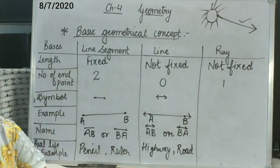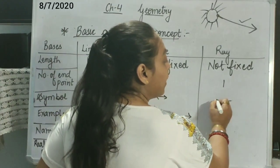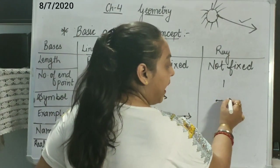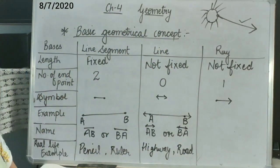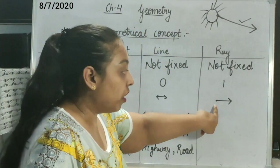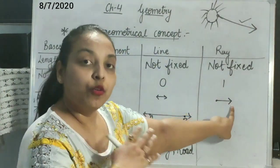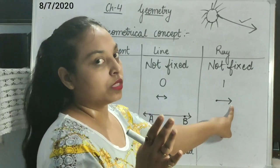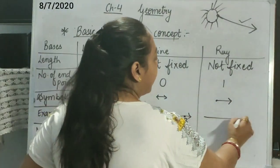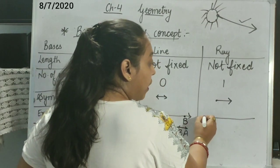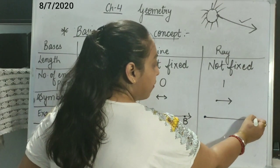And what will be the symbol for it? The symbol for ray will be a line with one dot at the beginning and an arrow at the end. Why? Because it shows that we have the origin, the starting point, but we are not having the ending point — it is moving continuously. Now, how can we draw an example? A straight line with a dot at the starting point and one arrow.